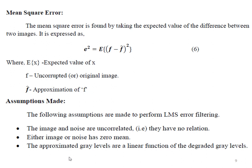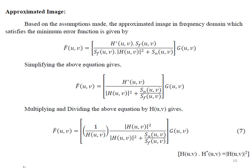The third assumption is that the gray level is a linear function. We consider the degraded image and the gain of the gray level as a linear map — a linear dimension.